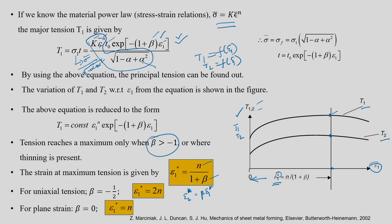This means that if you deform a material in uniaxial tension, the material will fail at a strain of 2 times the strain hardening exponent; but in plane strain, epsilon_1* equals n only. So the material can extend to a larger value of epsilon_1 in uniaxial tension compared to plane strain. In plane strain, maximum tension — indicating instability — is reached earlier.